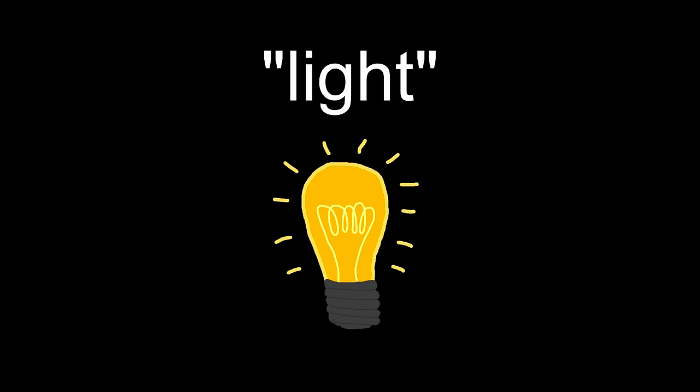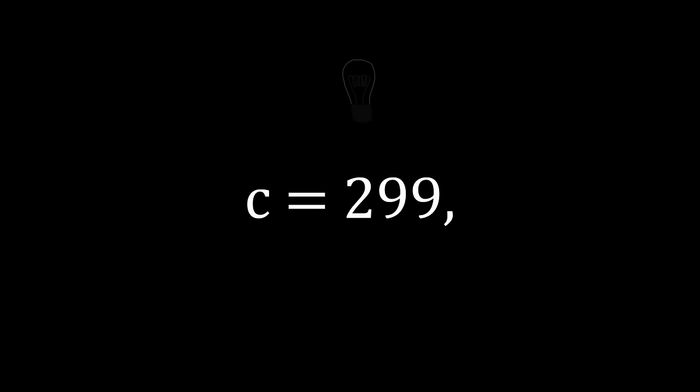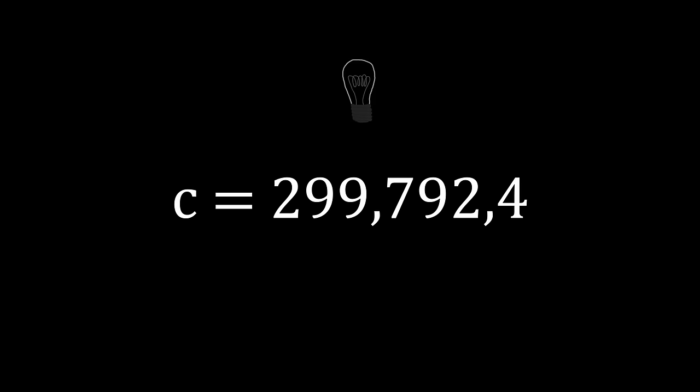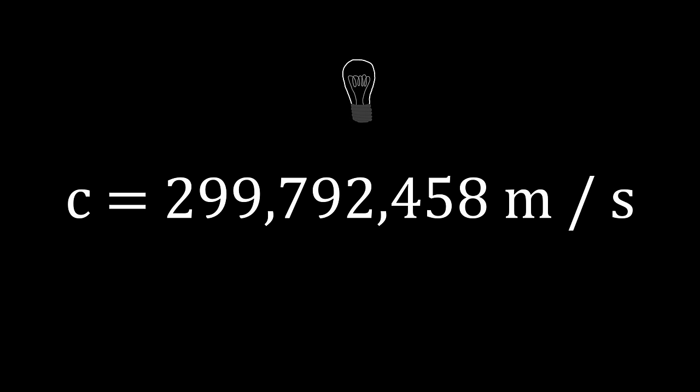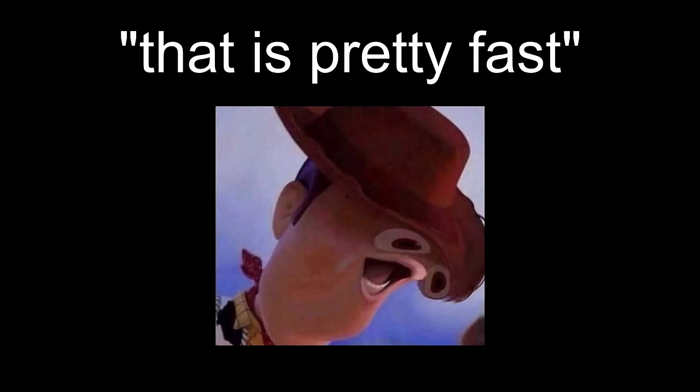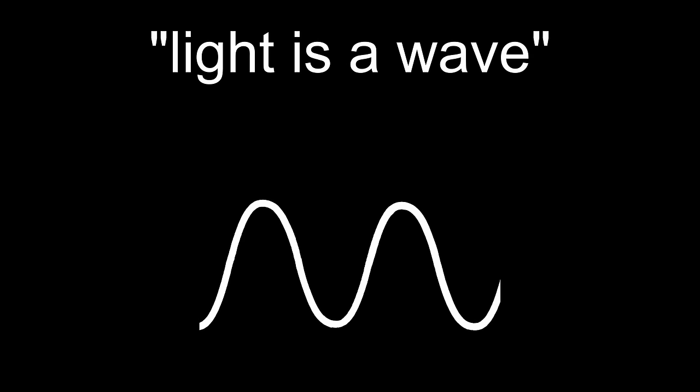Oh yeah, did I mention that light is like the fastest thing in the universe? To be exact, 299,792,458 meters per second in a vacuum. That is pretty fast, said everyone. Also, light is a wave, said everyone.